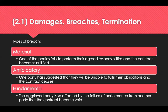A breach of contract occurs when one party fails to perform their legal obligation. There are three categories of contractual breach. A material breach is where one party fails to perform their agreed responsibilities and the contract becomes nullified. An anticipatory breach is where one party has suggested they will be unable to fulfil their obligations and the contract can cease. A fundamental breach is where the aggrieved party is so badly affected by the failure of performance that the contract becomes void. When creating terms, it's good practice to include the types of breaches that could result in a contract ceasing.